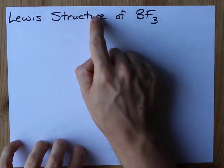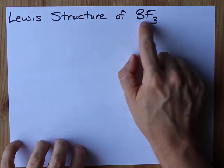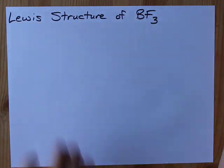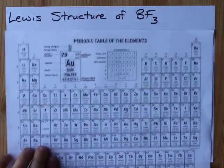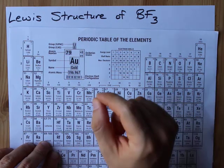Yo yo yo, let's do the Lewis structure of boron trifluoride or BF3. Step one is to count your valence electrons - this valence means outer shell.